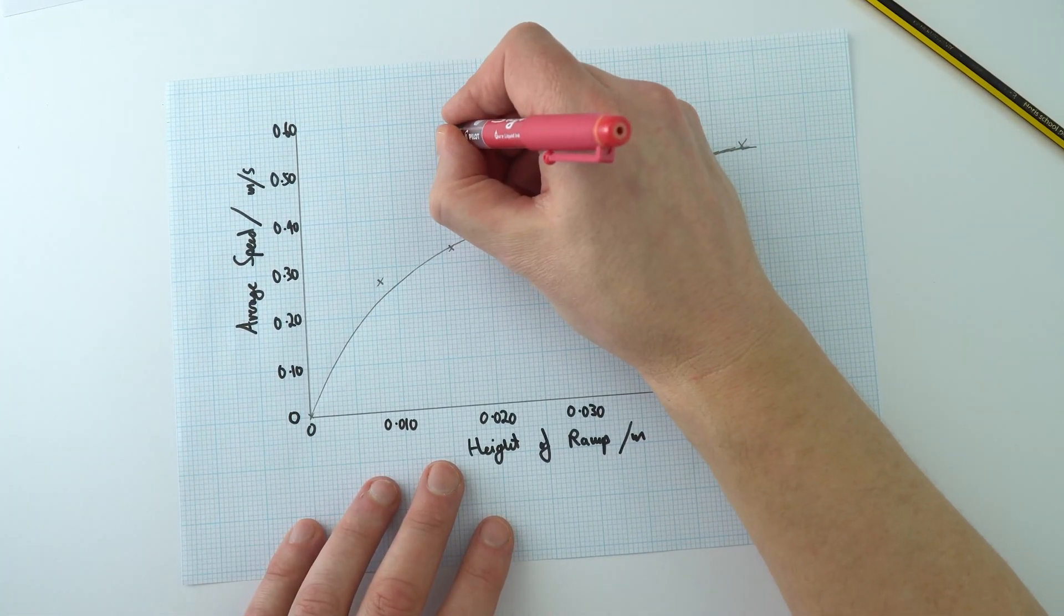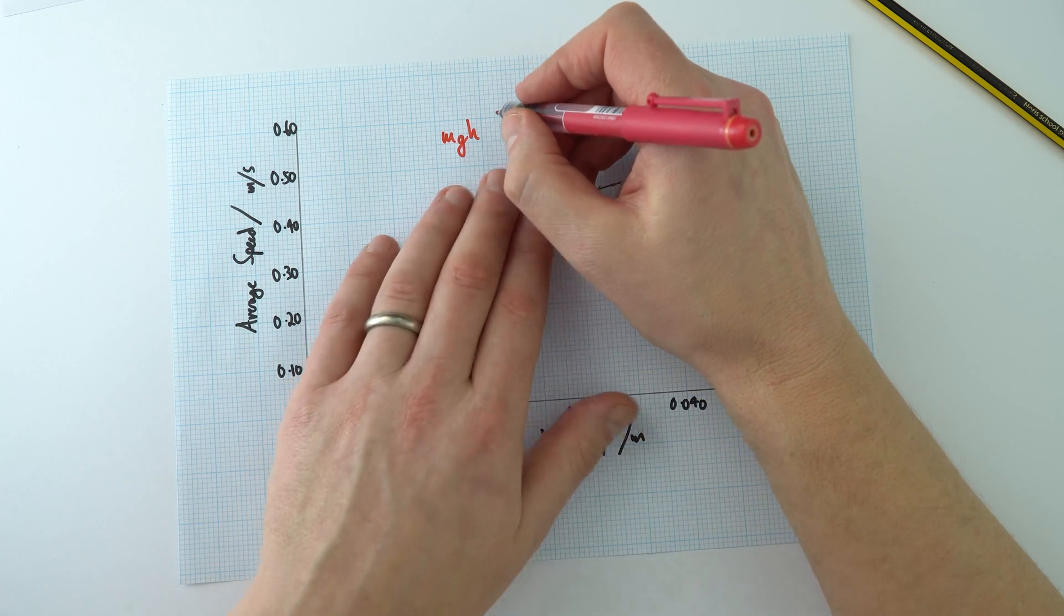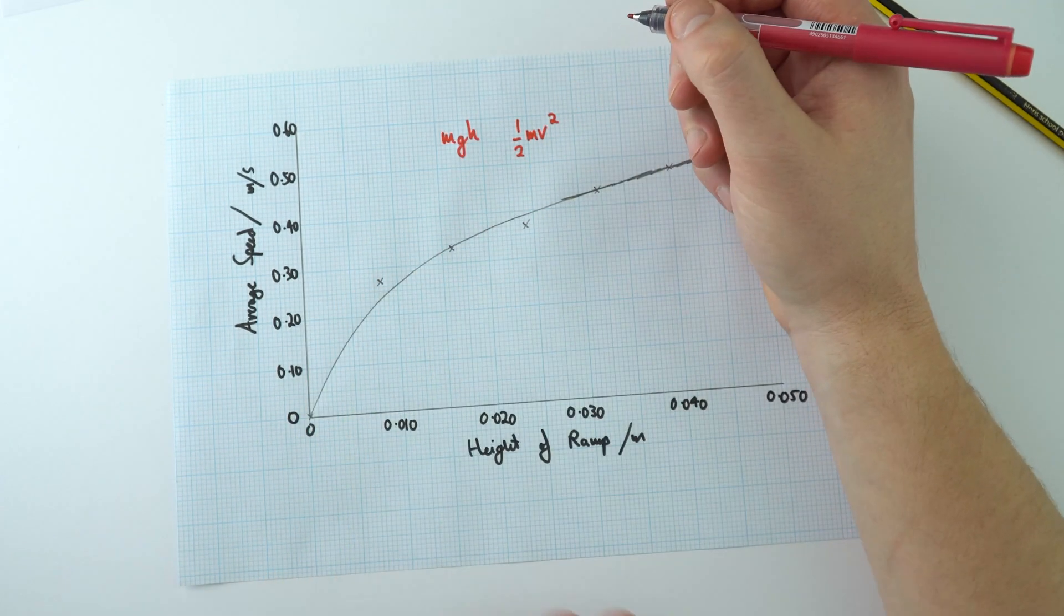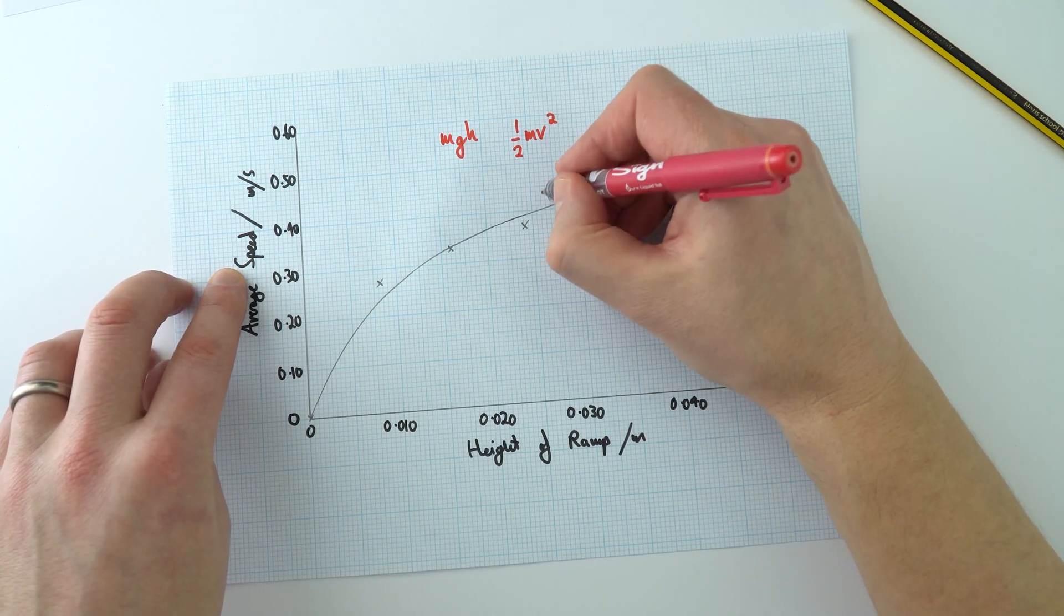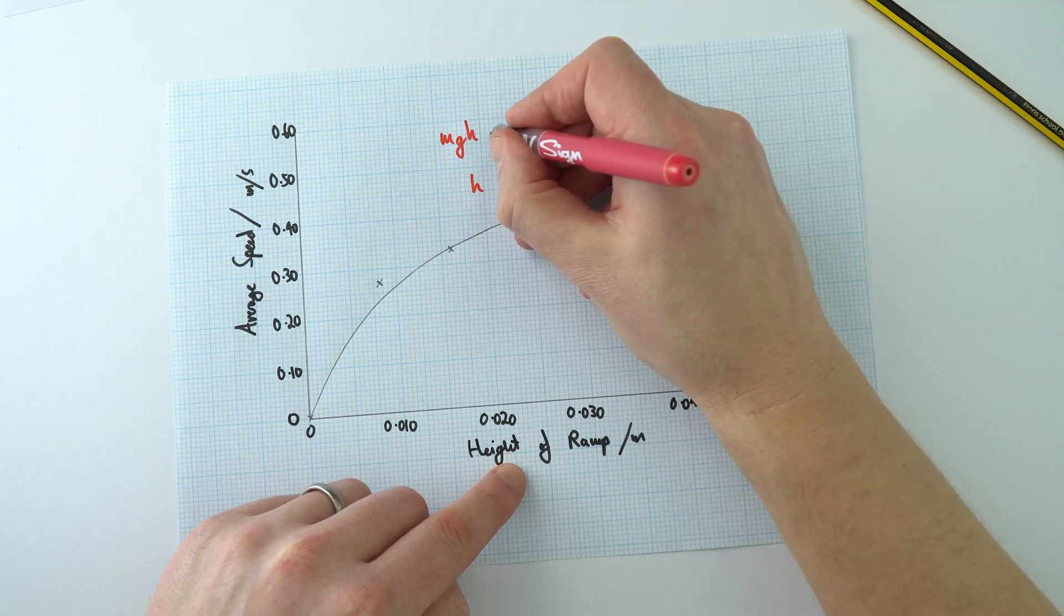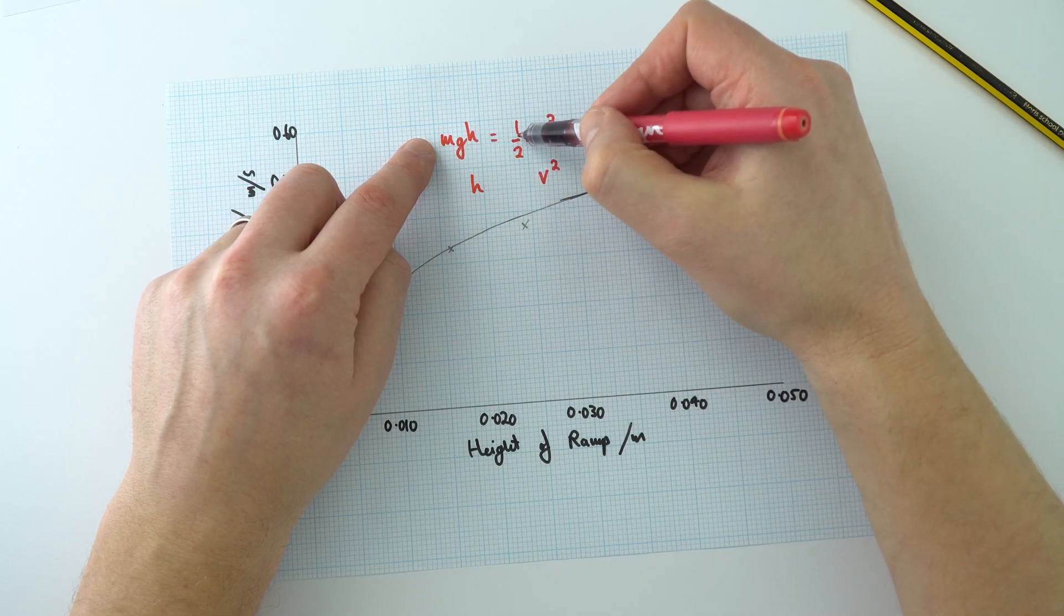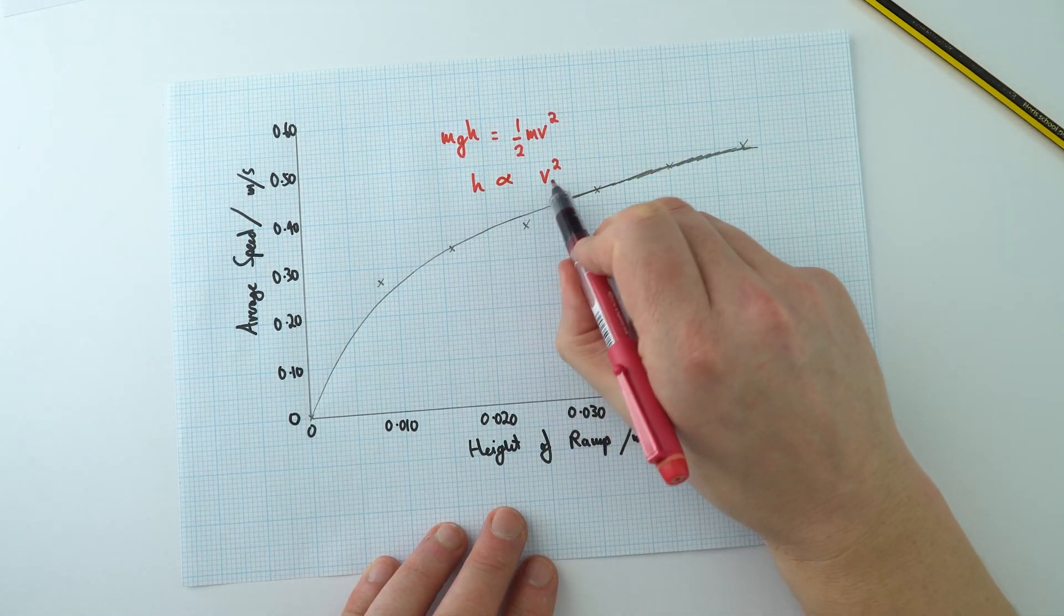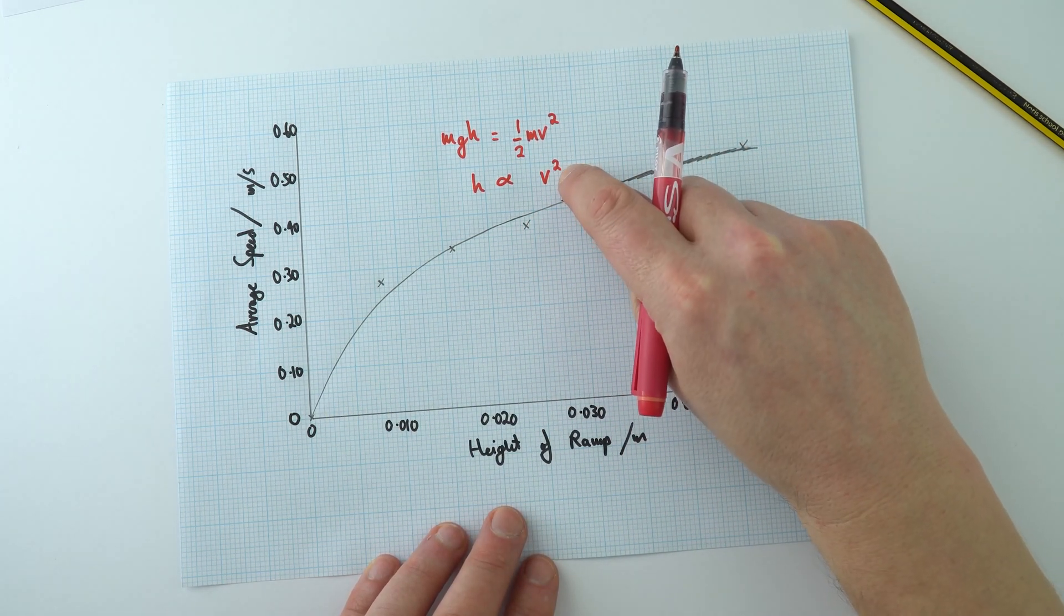Maybe the fact that at the start the trolley had energy stored in the gravitational potential store which is mgh, and over time this is transferred to the kinetic store which is a half mv squared. Basically these two things here, the average speed is the v term that we have over here and the height of the ramp is h. Provided all of this energy is transferred from one place to another, we've got the same mass of trolley, a half is just a constant, and so is the gravitational field strength. We can actually then say the height is proportional to v squared, and that's why we don't have a straight line because we have this squared term over here.